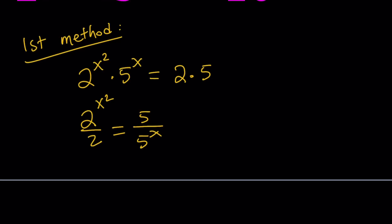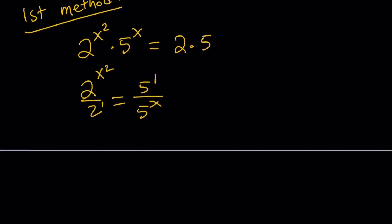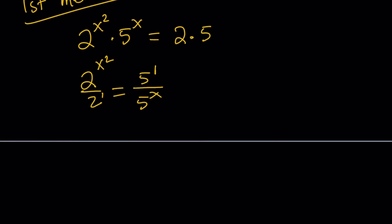When we divide two powers with the same base, and when we don't have any exponents it's 1, we can basically subtract the exponents. So this becomes 2 to the power x squared minus 1 equals 5 to the power 1 minus x. Awesome.